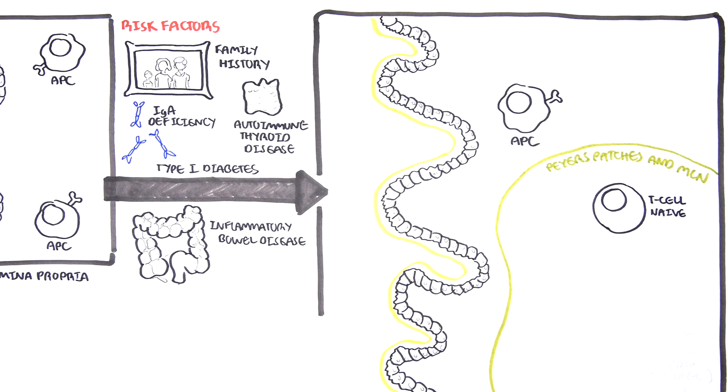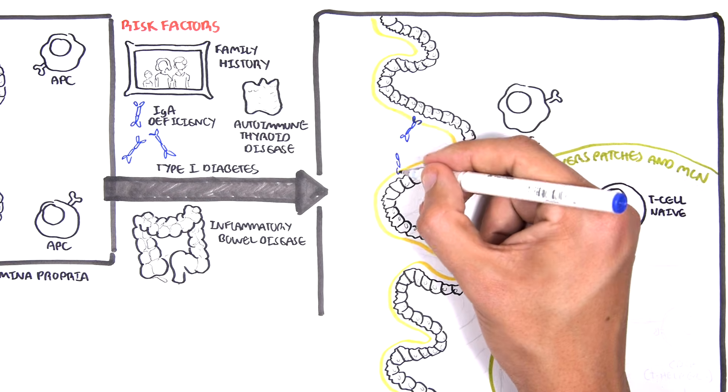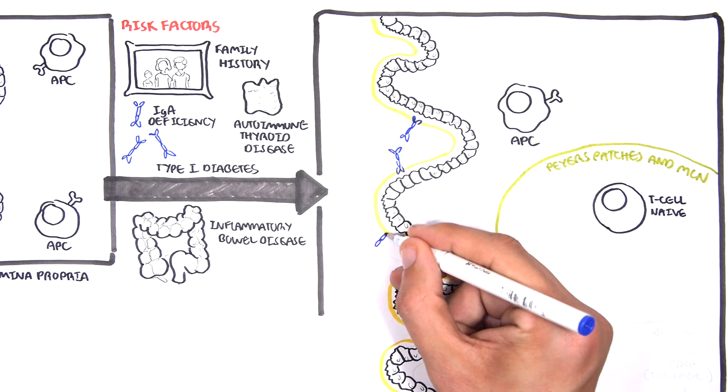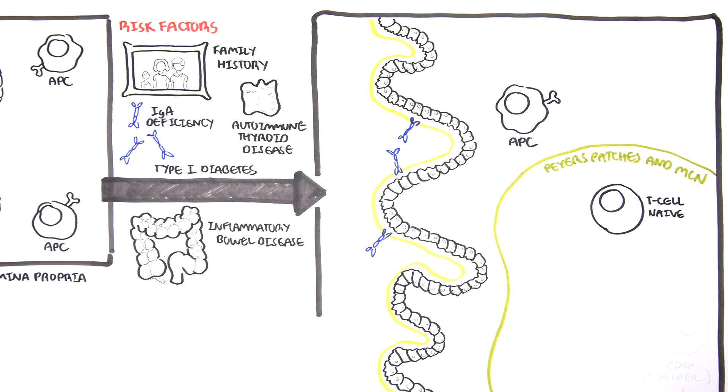Now above the mucosa, back here again, as mentioned earlier, there are antibodies, IgA antibodies. IgA is the antibody of the mucosal immune system, and it is dimeric here.